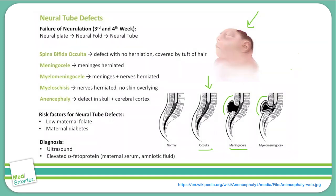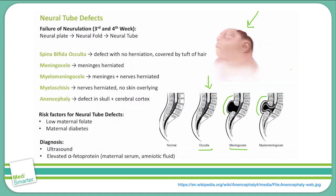This has been a quick review of neural tube defects and should give you all the information you need to get these questions right on your board exams. Be familiar not only with the descriptions of these various neural tube defects, but also how they look in photos. You'll often get questions that ask you to identify defects based on a picture of a patient, and you may even get second or third order questions linking the neural tube defect to the actual neuroembryology. Thanks for tuning in — be sure to leave comments on other topics you'd like to see videos on.